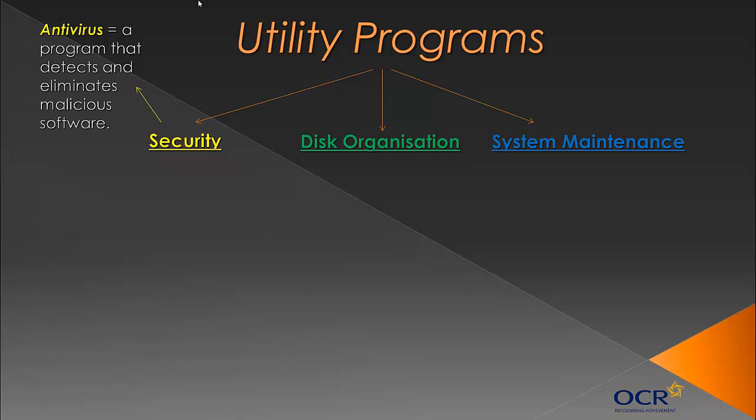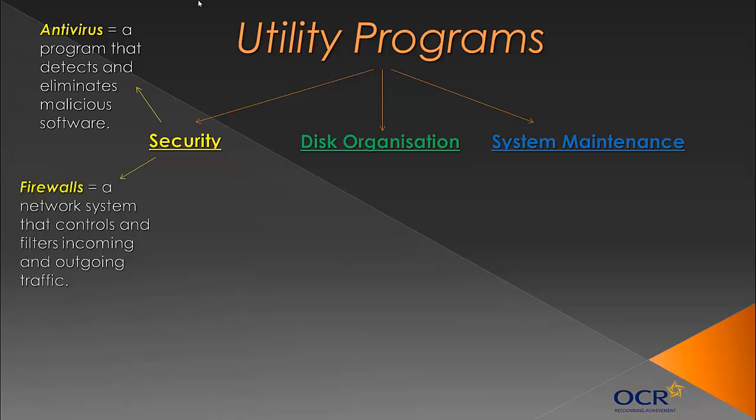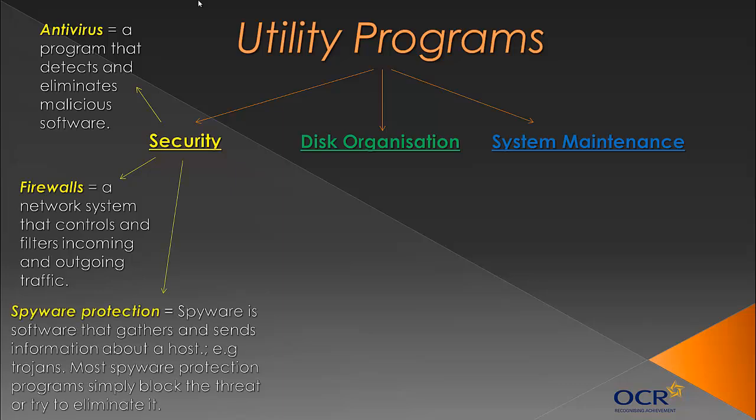On your computer, you may have pre-installed antivirus software. Antivirus software are programs that detect and eliminate malicious software — software intent on damaging your computer or deleting files. You'll usually have some antivirus installed, but people download their own because hackers design new viruses daily using the latest techniques, and an up-to-date antivirus should catch up with them. You'll also have firewalls installed in your network — these are a network system that controls and filters incoming and outgoing traffic, like a wall that filters traffic and stops you connecting to dodgy websites that could install spyware.